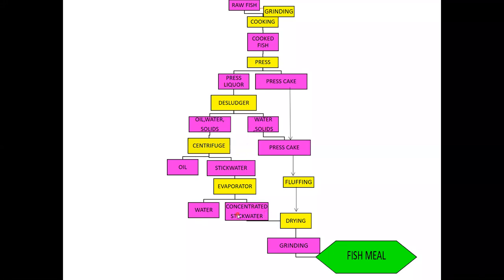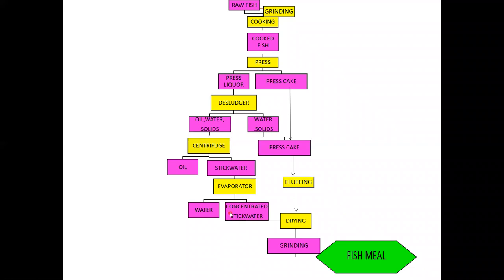The concentrated stick water is known as Condensed Fish Solubles (CFS). It contains 50 percent solid, of which 30 percent is protein, 10 percent is ash, and 5 percent is fat. CFS is sold in the trade under that name, or it can be directly dried and ground to obtain additional fish meal. So the wet rendering method yields two main products: fish meal and fish body oil, with CFS as a byproduct.